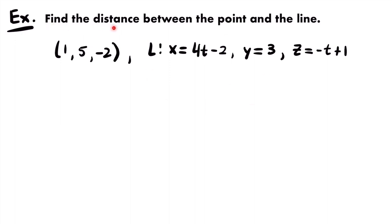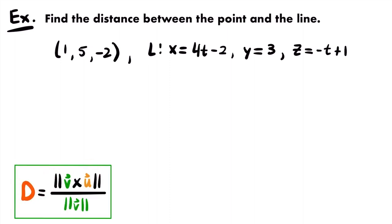Here's our last example: we want to find the distance between a point and a line. We're given a point (1, 5, -2) and a line represented by a set of parametric equations. The formula for this is: distance = |v × u| / |v|, where |v × u| is the magnitude of the cross product of vectors v and u, divided by the magnitude of v.